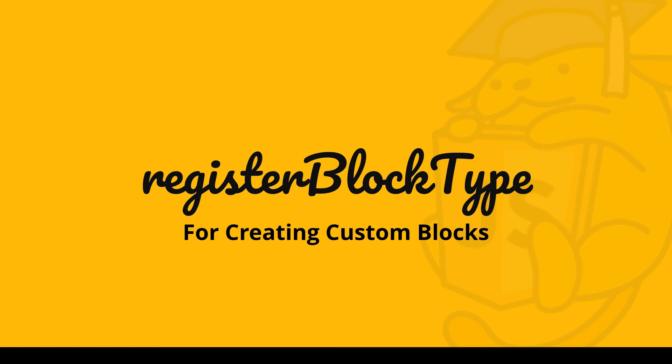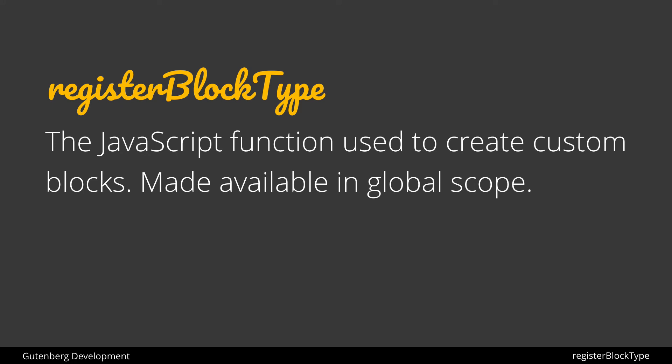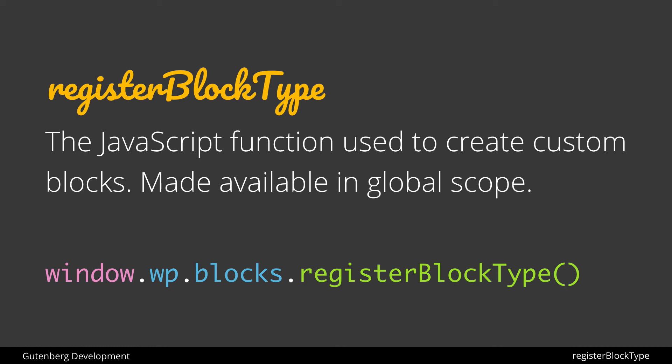The registerBlockType function is at the heart of creating custom blocks in the new Gutenberg editor, so it's really important that we take a thorough look at how it works. registerBlockType is a JavaScript function used to create custom blocks. WordPress makes this function available in the global scope, accessible as window.wp.blocks.registerBlockType. WP is a globally available WordPress object containing many helpful libraries, including the blocks library which contains helpful functions and components for creating blocks.